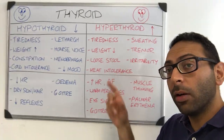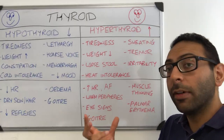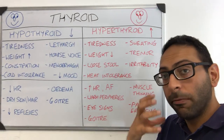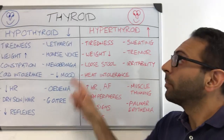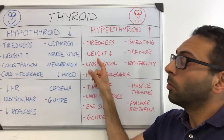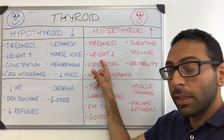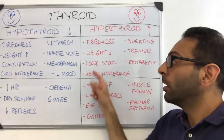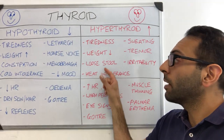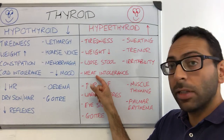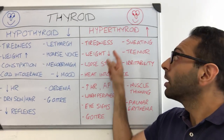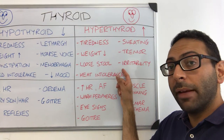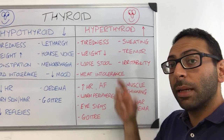Now if you think of hyper or overactive, think red, think hot, think fast. Tiredness again, weight drop this time because you're overactive, loose stool or diarrhea, heat intolerance, sweating, tremors, and maybe irritable as well.